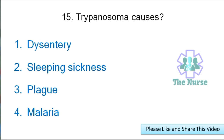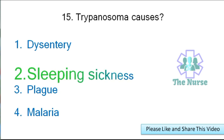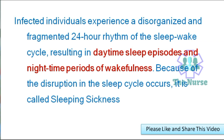Next question: Trypanosoma causes — dysentery, sleeping sickness, plague, or malaria? Correct answer: sleeping sickness. Sleeping sickness-infected individuals experience a disorganized and fragmented 24-hour rhythm of sleep-wake cycles, resulting in daytime sleep episodes and nighttime periods of wakefulness. Because of the disruption in the sleep cycles, it is called sleeping sickness.